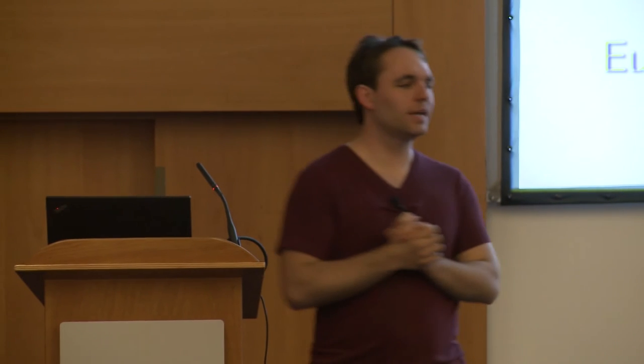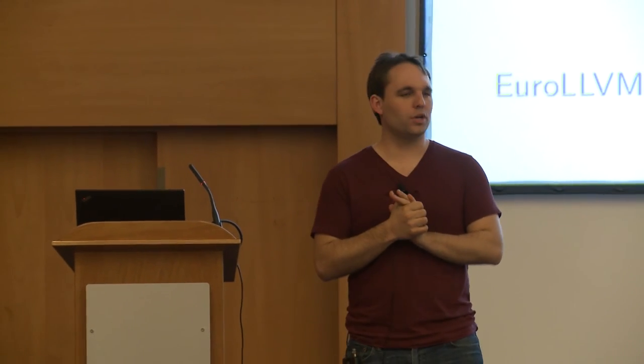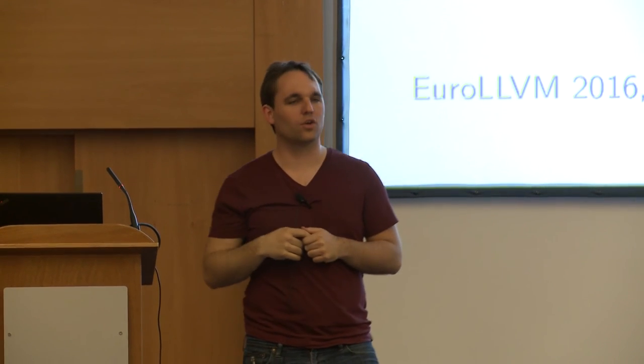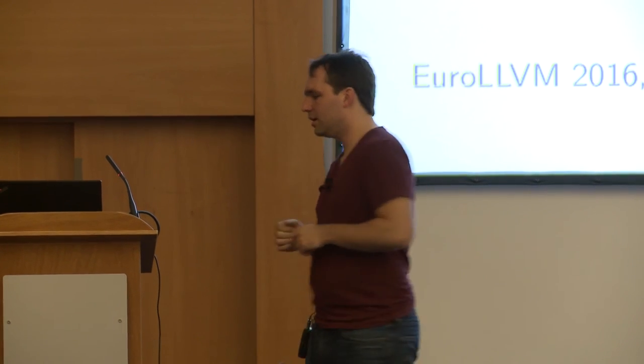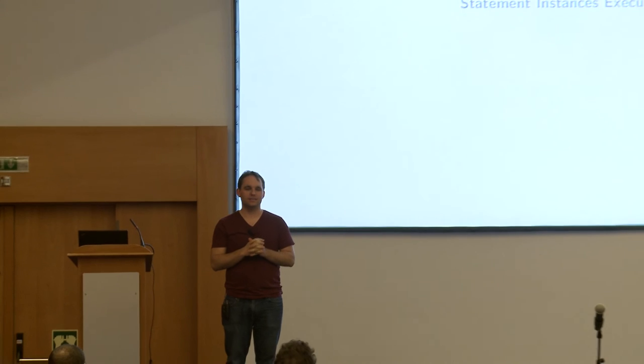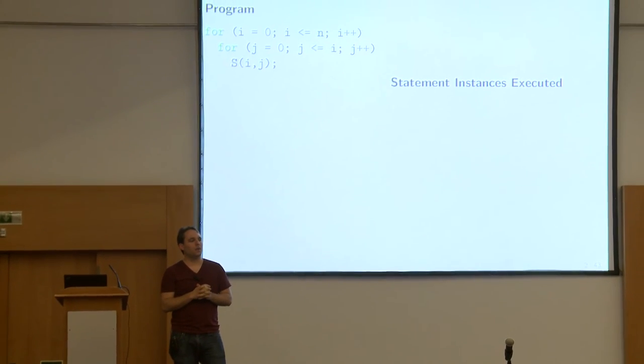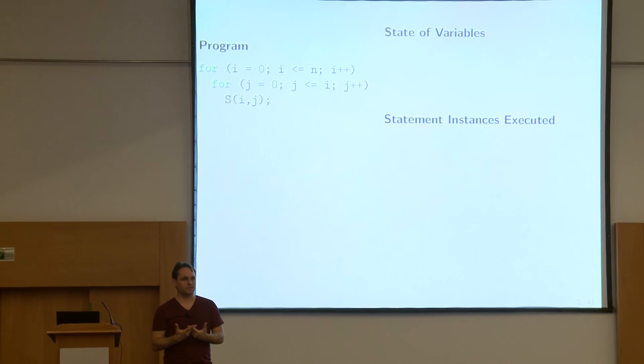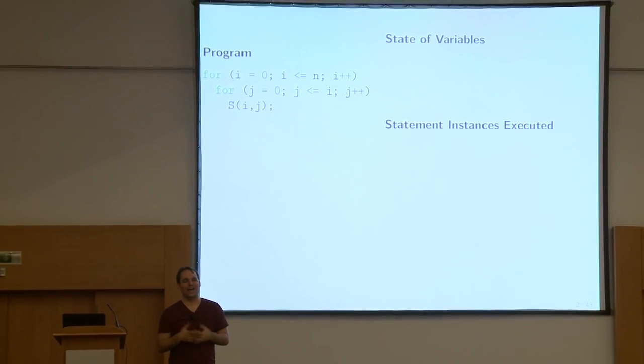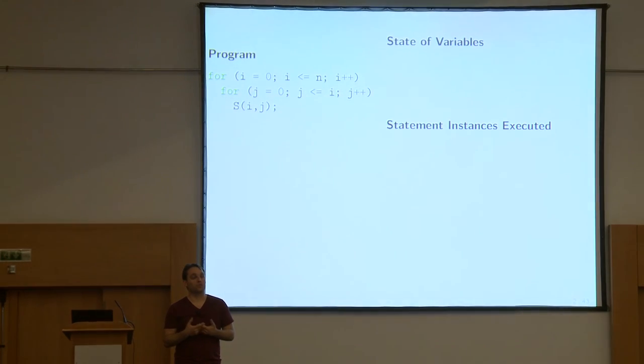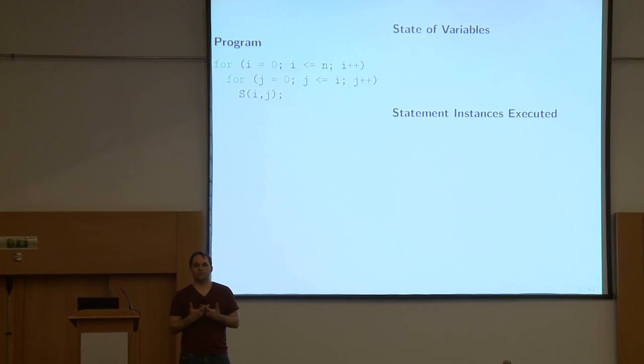Let's get started. Let's get some feedback: who already knows about polyhedral modeling? So the introduction in this area will be reasonably short. The model is very simple - the only thing we care about are loops, mostly at least. The question is what would be a convenient way to represent loop nests and loop code such that you can, on a higher level, reason about them, transform them, and optimize them. Transformation means many different things.